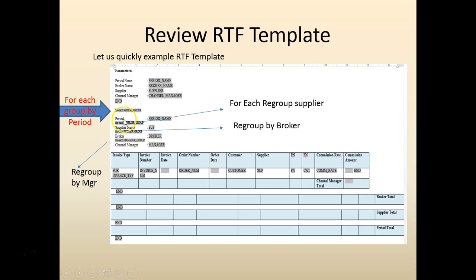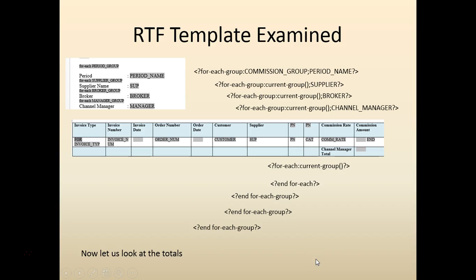The first thing we group by is period, then we group by supplier, then by broker, then by manager. Then there are invoices, broker total, supplier total, and period total. For each commission period, we regroup by commission group period name. Let's take a quick look at the XML file before we continue.